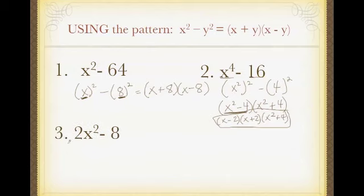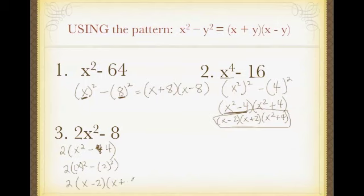Here I have that greatest common factor of 2, x squared minus 4, and I can factor that as 2, x squared minus 2 squared, which gives me 2, x minus 2, times x plus 2.